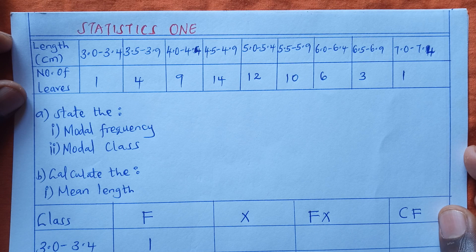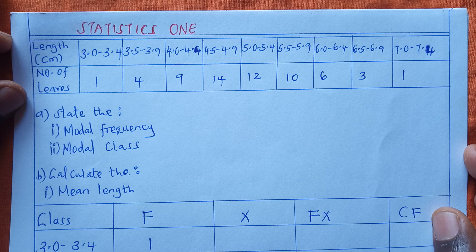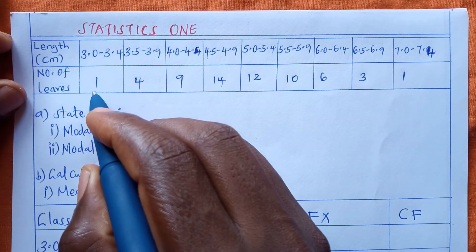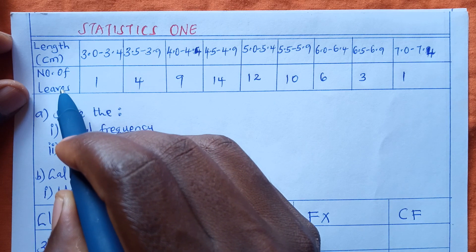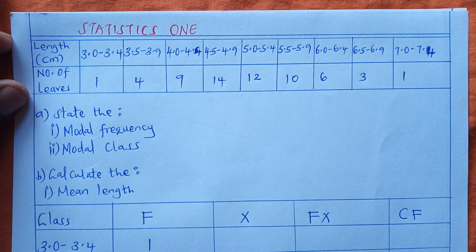We have a question here whereby we begin with a table with two rows, whereby one represents the length in centimeters and the next row represents the number of leaves. The length stands for class and the number of leaves stands for frequency.